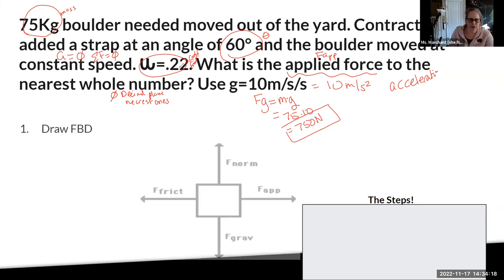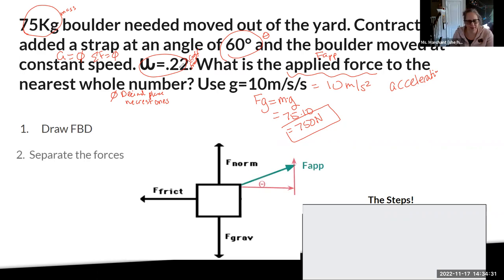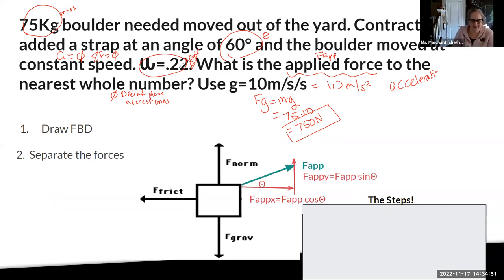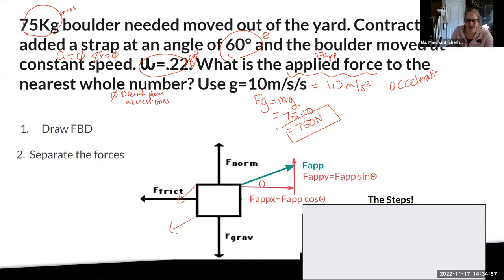Drawing the free body diagram: we have force of gravity, force of normal (it's on a surface), and the contractor's force applied at an angle, so we separate it into X and Y components. When tugging on something at an angle on a flat surface: the X component is force applied × cosine theta, and the Y component is force applied × sine theta. On a flat surface you can just memorize cosine for X and sine for Y.